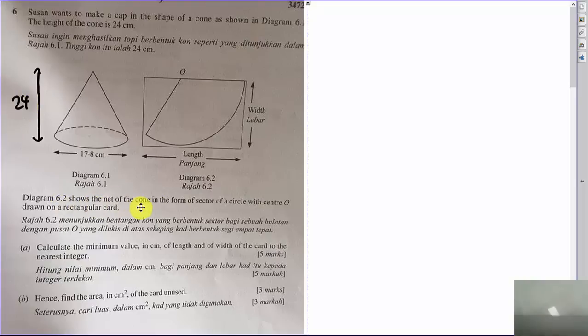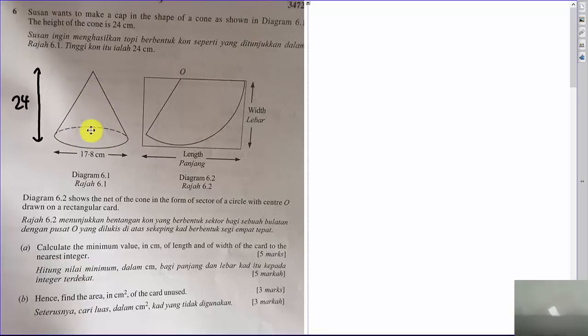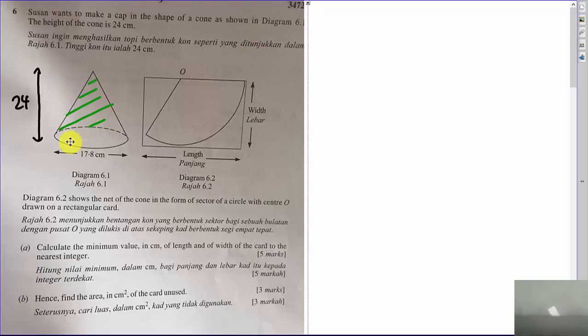Diagram 6.2 shows the net of the cone in the form of a sector of a circle with center O, drawn on a rectangular card. The sector here is just the curved area of the cone — it's not including the base. That means this sector is not including the area of the circle; it's just the curved area.